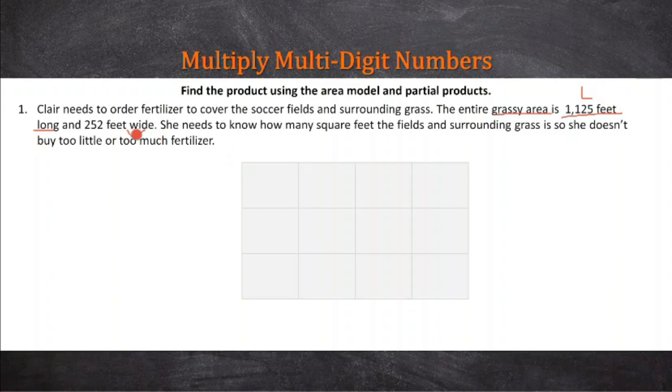If we look at area, the formula is area equals length times width. All we need to do is just go, length is equal to 1,125 feet, and the width is equal to 252 feet.